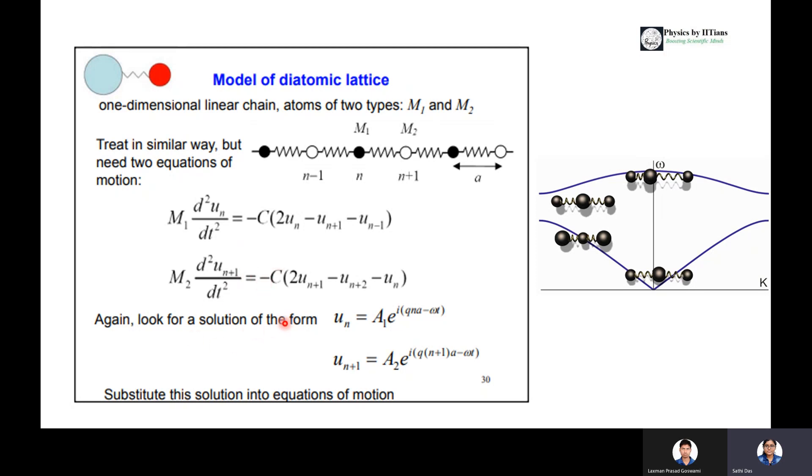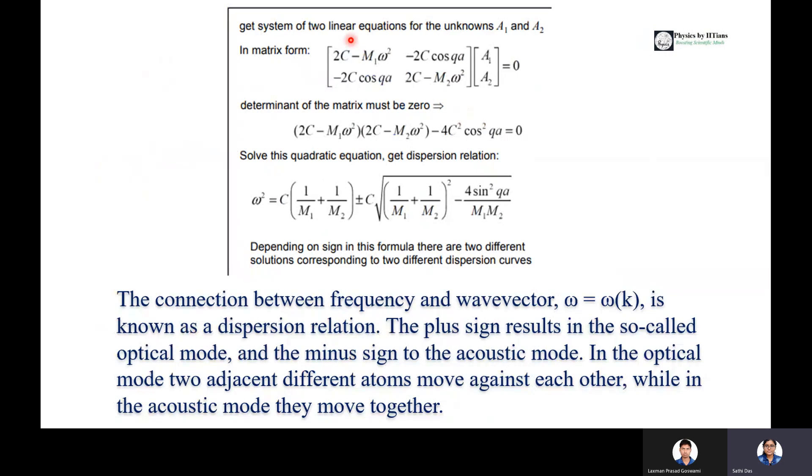What will be the solution? The solution of the form un equals A1 e^(iQnA - ωt) and un+1 equals A2 e^(iQ(n+1)A - ωt). Both motions are oscillatory in nature, one with amplitude A1 and another with amplitude A2. If we substitute the solution in the equation of motion, we get a system of two linear equations with unknowns A1 and A2.